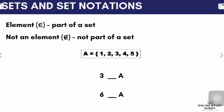The symbol used to denote elements is this symbol — it looks like an inverted 3, or the letter E. We also have a symbol for those that are not part of a set or not an element, which is an E with a slash. In our example, 3 is an element of set A, so we use the membership symbol. And 6 is not an element of set A, so we use the non-membership symbol.